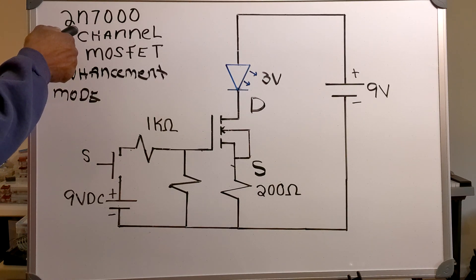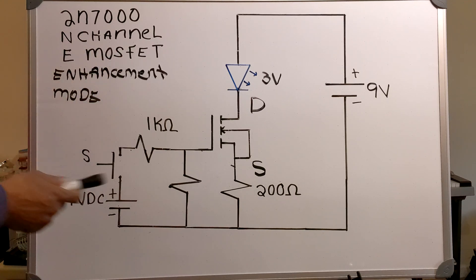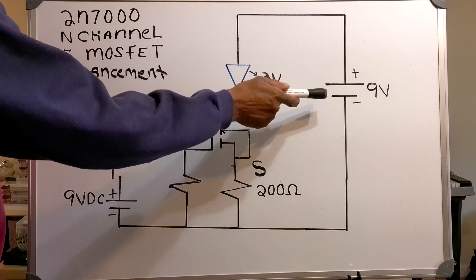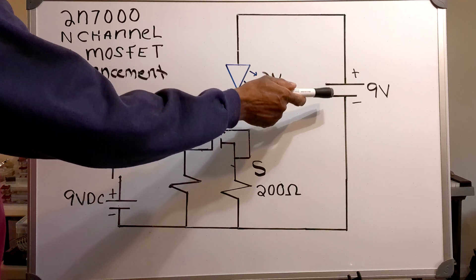Now in this video, I've got the 2N7000 N-channel E-MOSFET. Across the front of the transistor, I've got a 9V DC source.